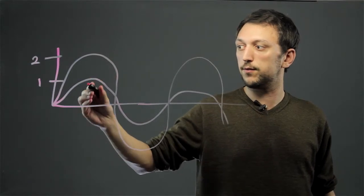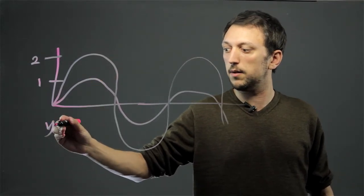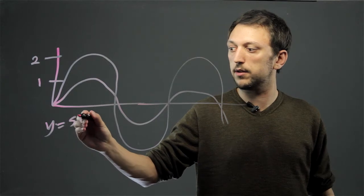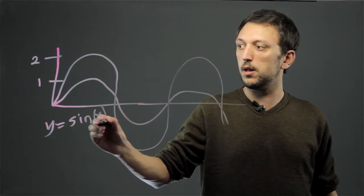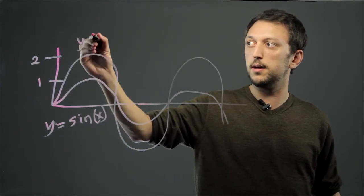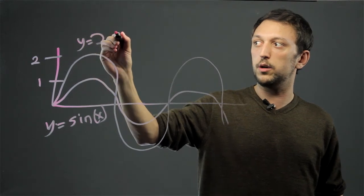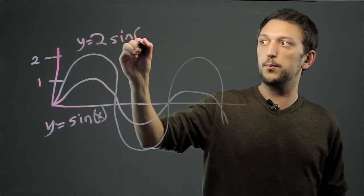Then we could say that this first line might be y equals sine x, and this one would be y equals two sine x.